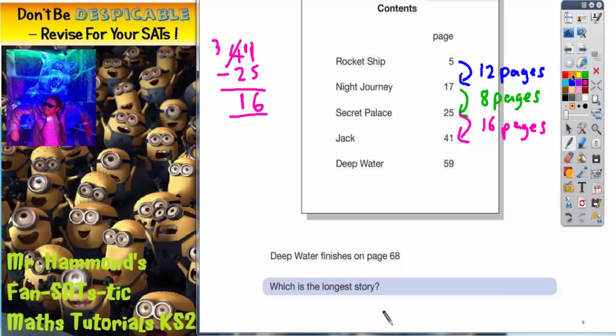Jack to deep water is 41 to 59. Well if I add on 10 I'd get 51 and another 8 will take me to 59. So 10 and another 8 is 18. So that one is 18 pages long. As you can see there's different ways you can do this. You can do this by counting up from 41 to 59, you could do it by the column method again. If you want to check, 59 take away 41, 9 take 1 is 8, 5 take 4 is 1. Still 18 pages. So there's different ways of finding the gaps, but you must find the gaps.